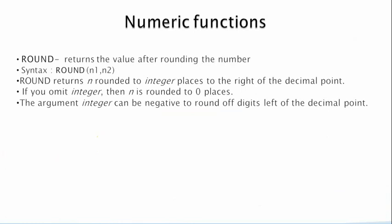The next function is the ROUND function. This returns the value after rounding the number. The syntax is similar to TRUNC: ROUND(n, integer). It returns n rounded to the specified integer places to the right of the decimal point. If integer is omitted, n is rounded to zero places. This number can also be negative to round off digits to the left of the decimal point.